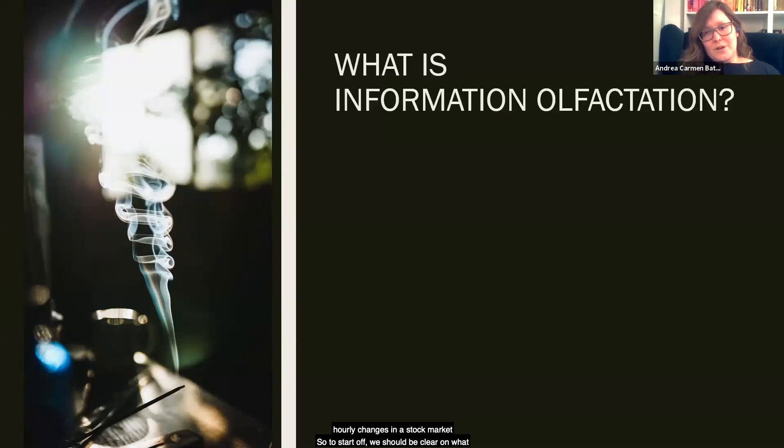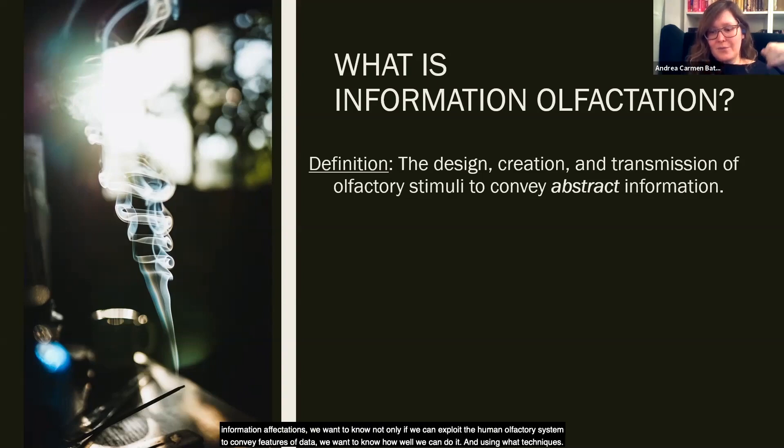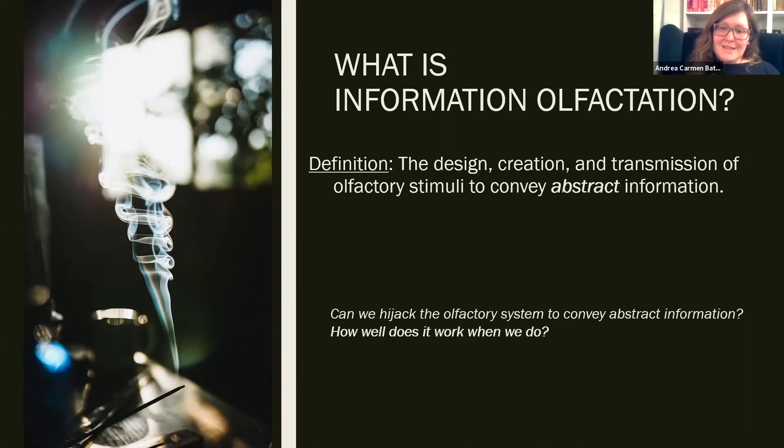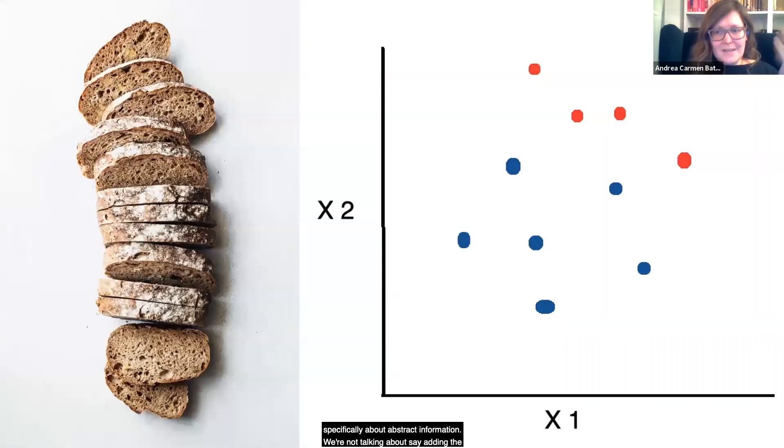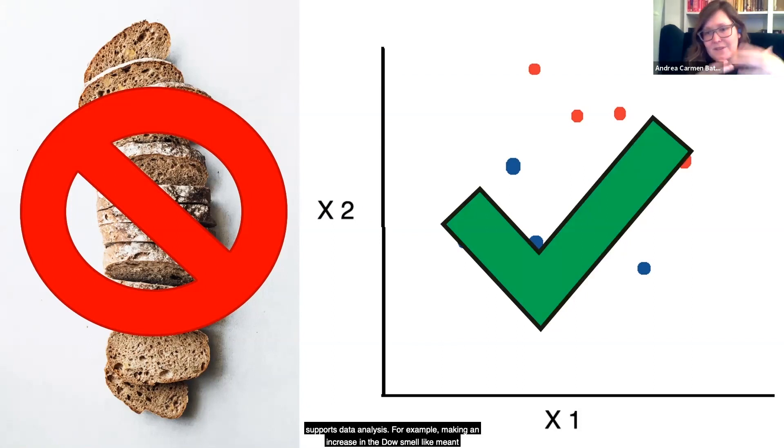So to start off, we should be clear on what, in general, informational olfactation is. It's the design space and implementation of displays that use smell to convey abstract information, that's information without a natural spatial mapping, like the price of a particular stock, students' grades in a class, or the major that student is enrolled in. So in a study like ours, where we're evaluating informational olfactation, we want to know not only if we can exploit the human olfactory system to convey features of data, we want to know how well we can do it and using what techniques. We're not talking about adding the smell of baking bread to a VR scene that's set in a bakery to enhance immersion. We're talking about representing data through smells in a way that supports data analysis. For example, making an increase in the Dow smell like mint, while a downturn smells like lemon.